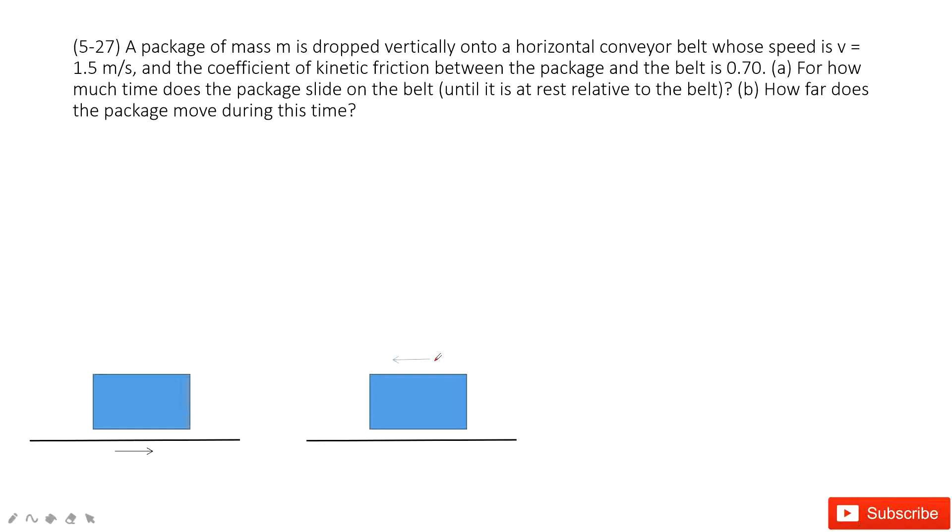But when we want to find the acceleration, look at the horizontal direction. There is only friction. So we need to decide the direction for friction. How can we do that? We can see the friction is always opposite to the motion. The motion is backward, so the friction is inward, forward.